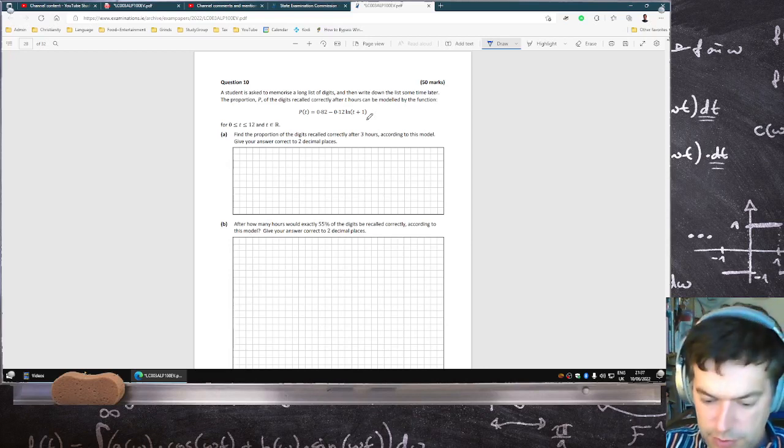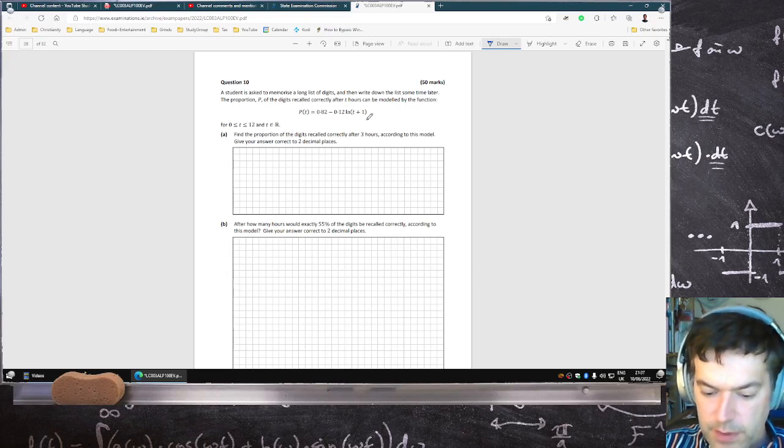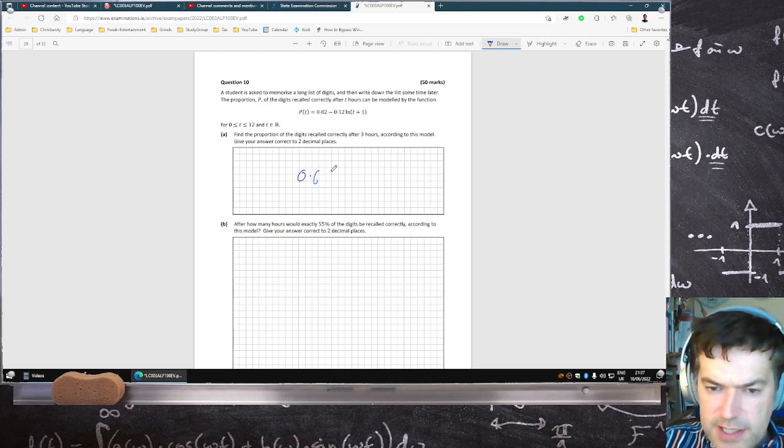If you put in T as 3, 0.82 minus 0.12 times log 4, that's 0.65. And then they want you to solve when this is equal to 0.55.